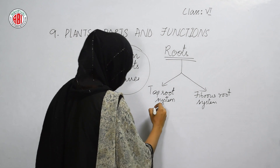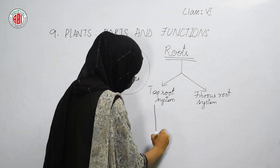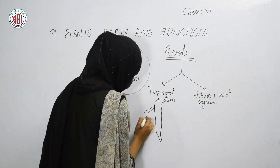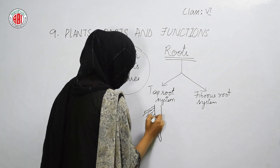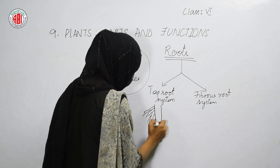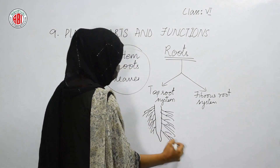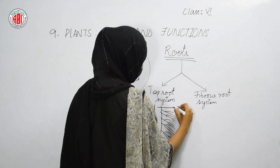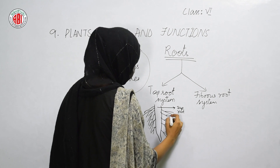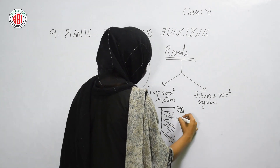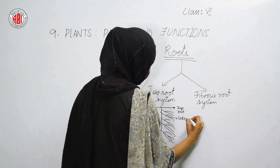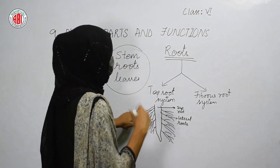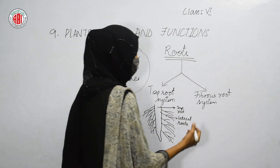In the tap root system, we can find a thick root present in the middle as the base, and from the sides we can find small, thin thread-like branches. The main thick root is called the tap root, and the roots arising from its sides are called lateral roots.